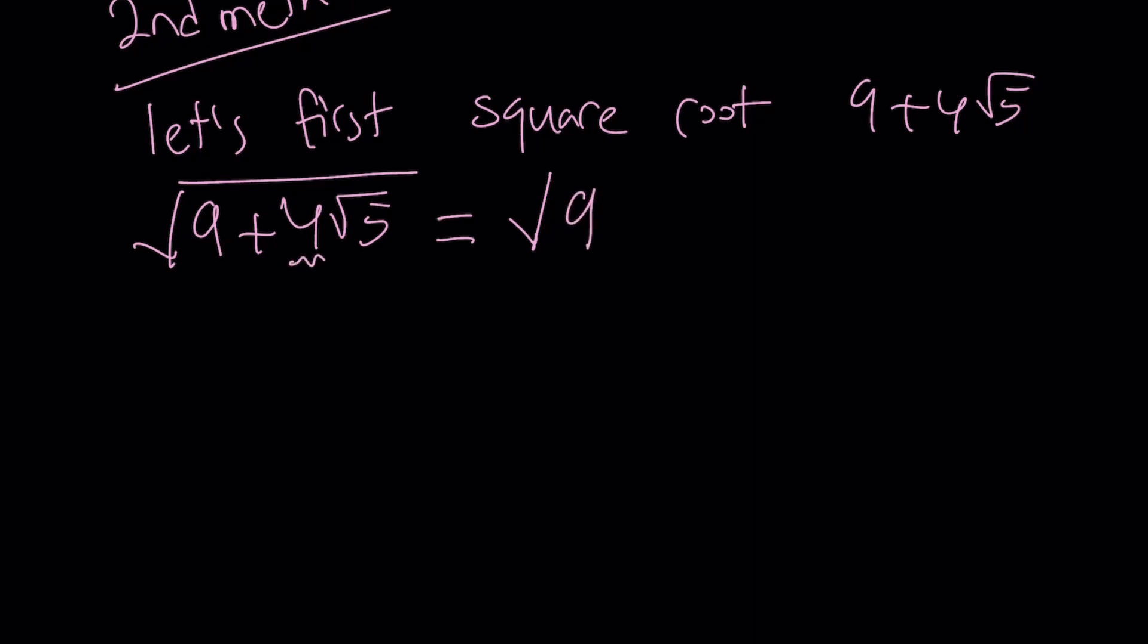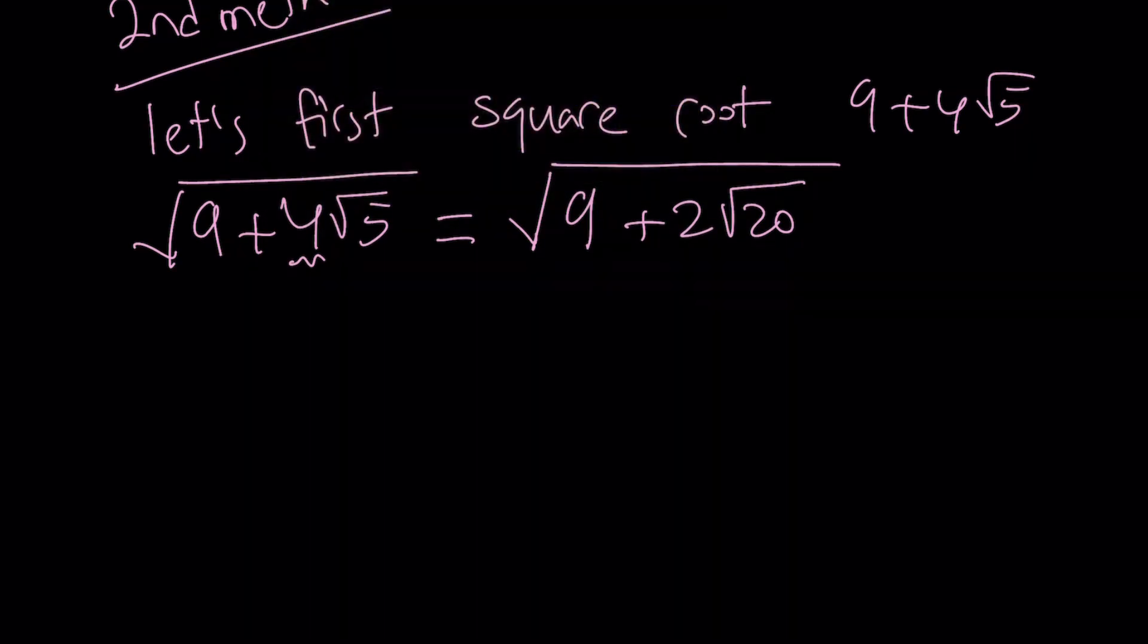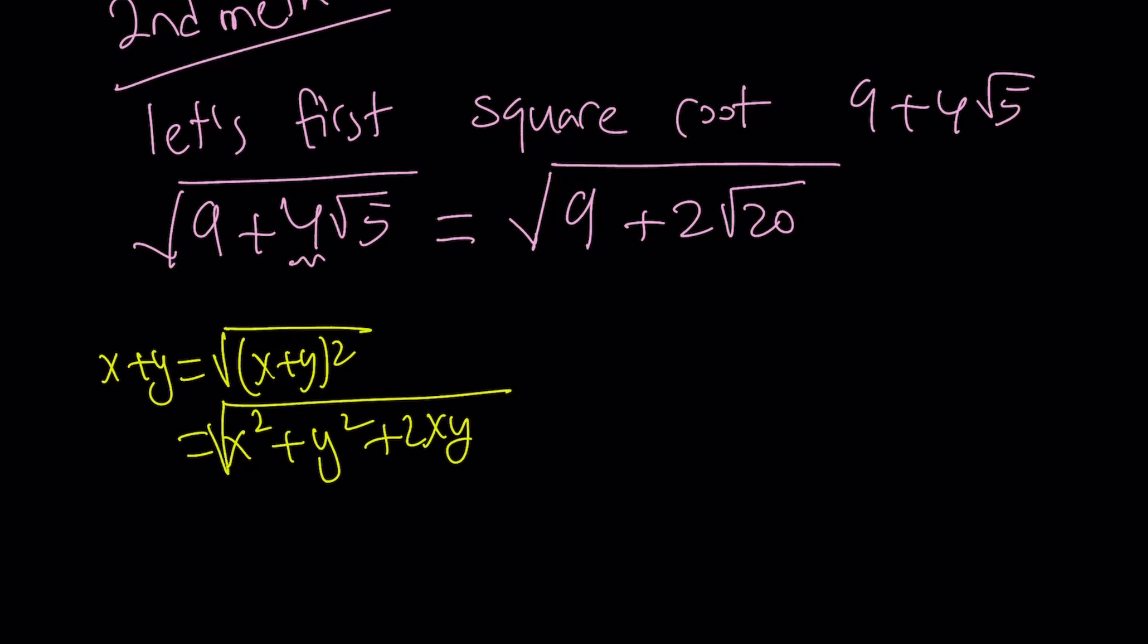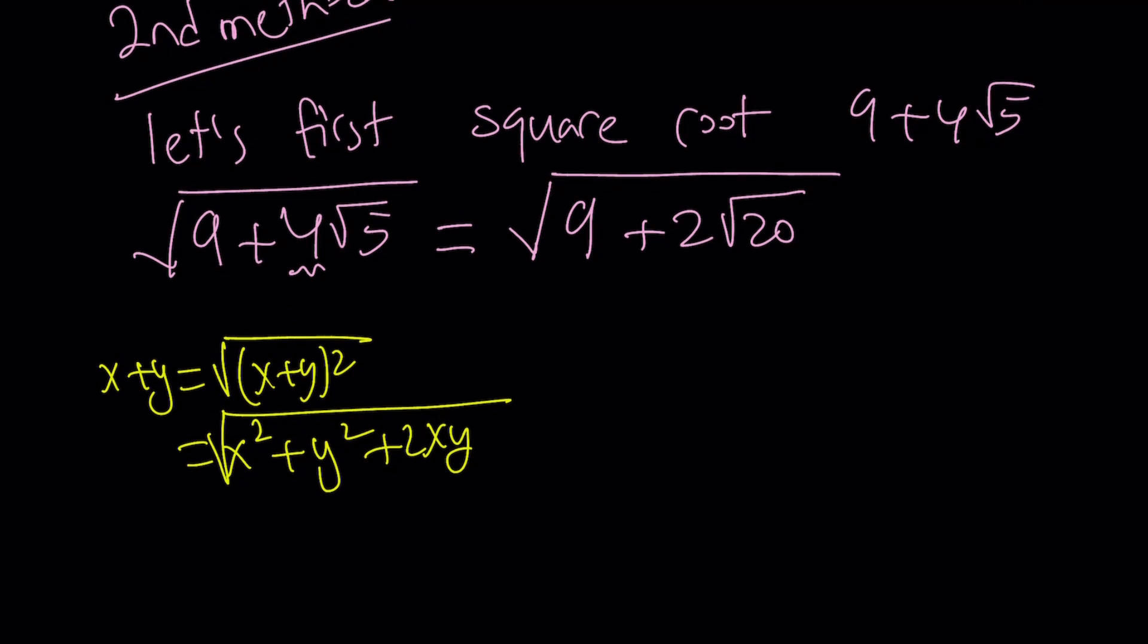First of all, I want to turn this 4 into a 2. Go ahead and put the 2 inside, and you can write this now as 2 times the square root of 20, because 2 root 5 is root 20. Now, I want to set my expression equal to something like this: the square root of x plus y quantity squared. And that can be written as x squared plus y squared plus 2xy. That's why it is important to have a 2 in the front. Everything is positive, so we don't have to deal with absolute values.